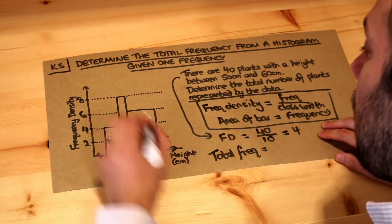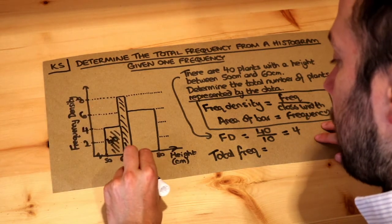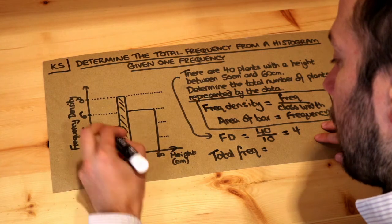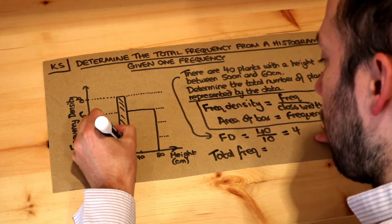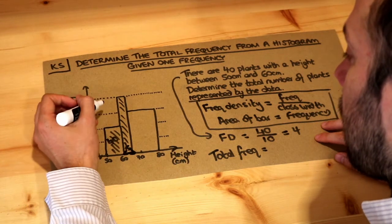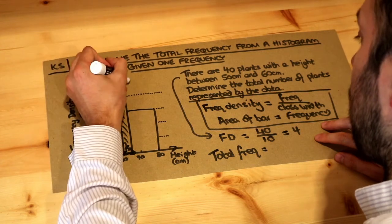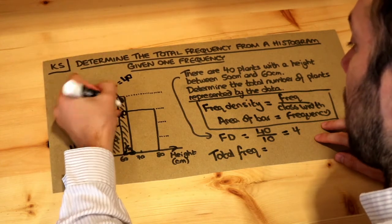What about the other bars? Well let's look at this bar. The width of the bar is 5, because look, 60 to 65 there, that's a width of 5, and the height of the bar is, we can see, 8. So that's 5 times 8, which is an area and hence a frequency of 40, so that represents 40 plants.